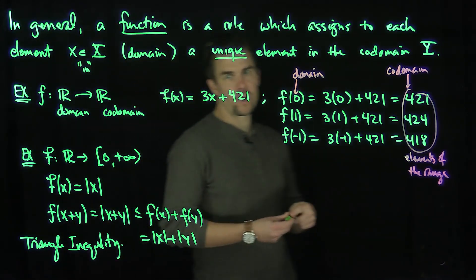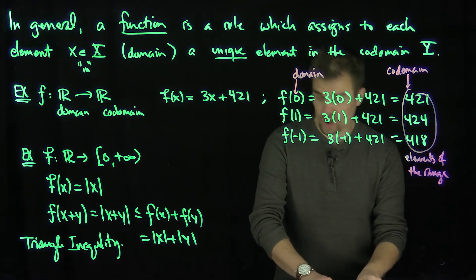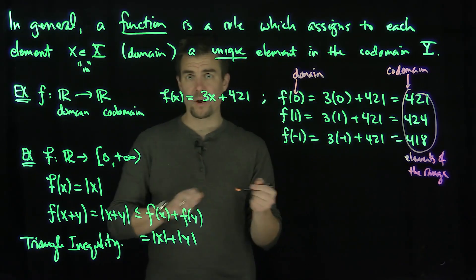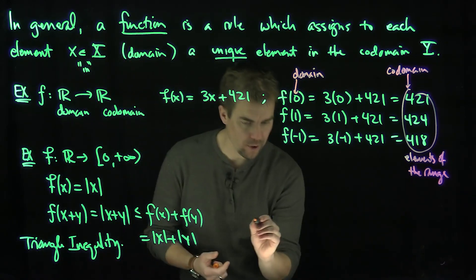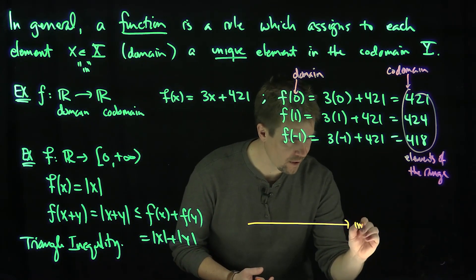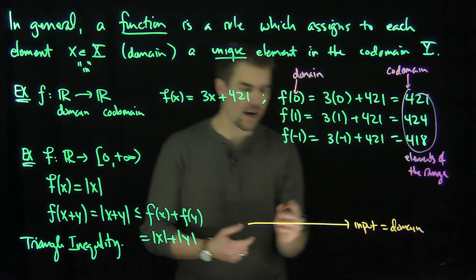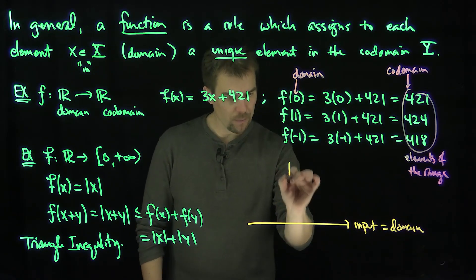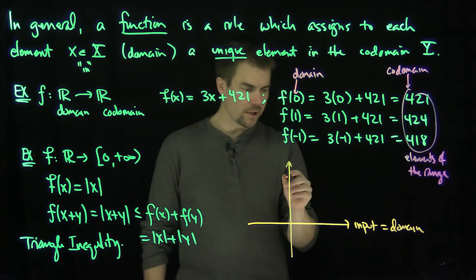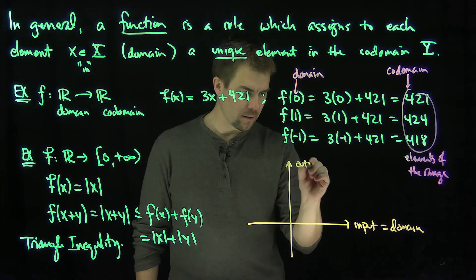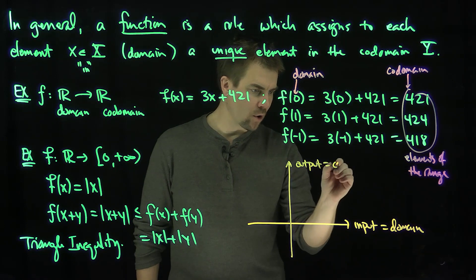And there's also a nice geometric way to think about functions, especially if we're talking about functions between the real numbers and the real numbers. If our input is a real number, what we're going to do is we're going to put the domain on the horizontal axis, then we'll draw a perpendicular axis over here. And this perpendicular axis will be the output or the codomain.